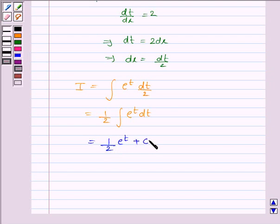Now put the value of t. Substitute t as 2x plus 3. It becomes 1 by 2 e to the power 2x plus 3 plus c.